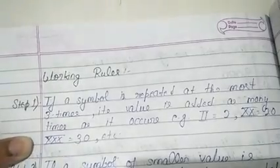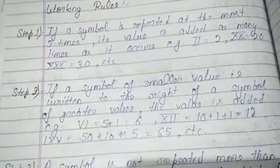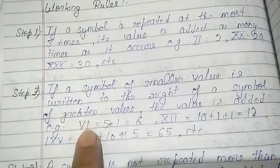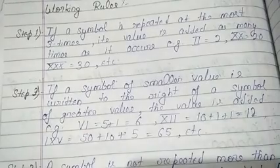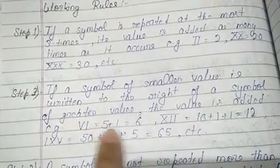Step 2: If a symbol of smaller value is written to the right of a symbol of greater value, the value is added. Suppose the symbol has smaller symbol on right side of greater value, then we add them. For example: VI is 5 plus 1 equals 6, XII is 10 plus 1 plus 1 equals 12, LXV is 50 plus 10 plus 5 equals 65.